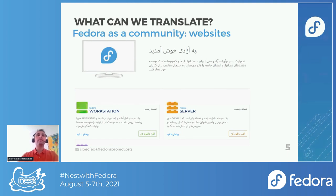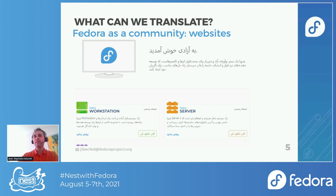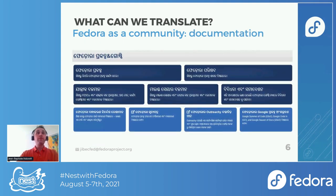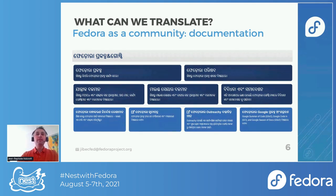So what can we translate? First, in Fedora as a community project, there are websites. You can see the Get Fedora website translated in Farsi — the text orientation may not be correct, but you get an idea of how it looks. Still in Fedora as a community, you can also translate the documentation. Here you have a translation in what I think is Odia, which is a language in India, and the whole documentation can be translated.